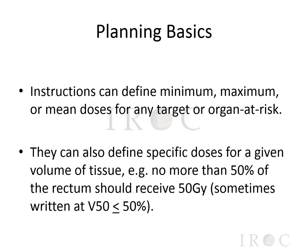The instructions provided to the dosimetrist by the radiation oncologist can define minimum, maximum, or mean doses for any target or organ at risk. They can also define specific doses for a given volume of tissue. For example, no more than 50% of the rectum should receive 50 gray, which is sometimes written as the V50 should be less than or equal to 50%.